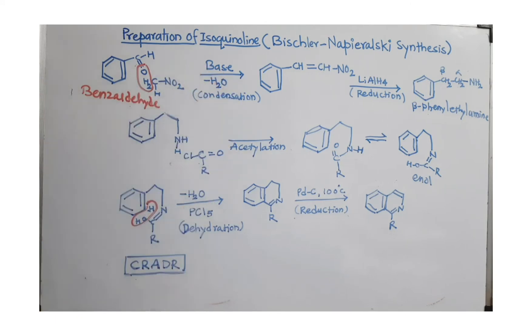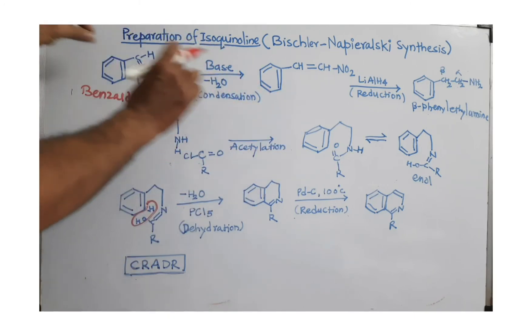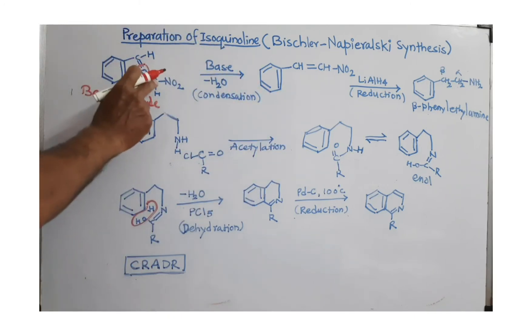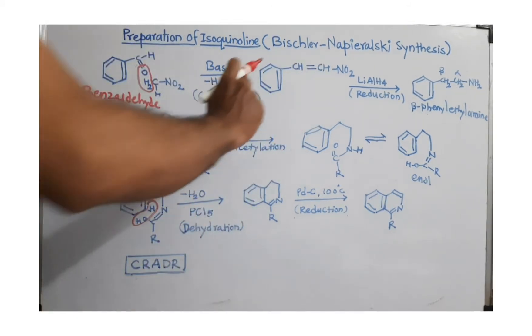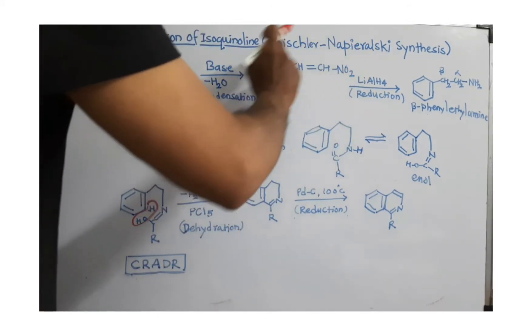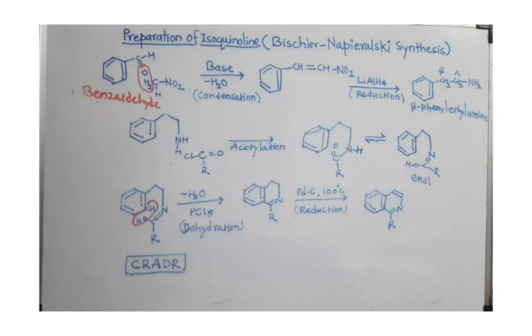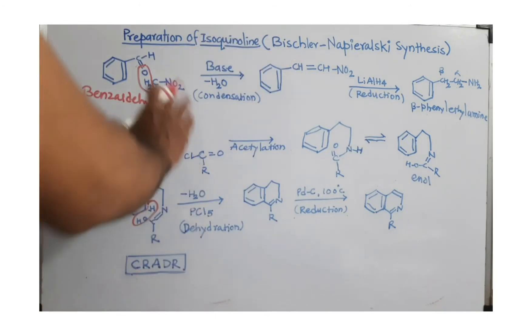So, this is condensation product, I mean condensation reaction, joining these two species together by using a double bond here and here. So, I got here this nitrostyrene. This nitrostyrene is produced after this reaction.